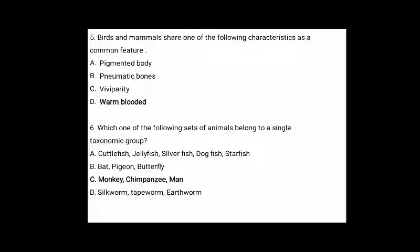Fifth question: birds and mammals share which common characteristic feature? The correct answer is warm-blooded animals, because birds and mammals are both homeothermic and can maintain a constant body temperature. Sixth question: which of the following sets of animals belongs to a single taxonomic group? The correct answer is option C: monkey, chimpanzee and man, because monkey, chimpanzee and man are primates belonging to class Mammalia.